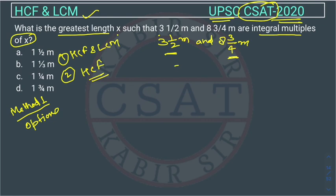This will become 7 by 2 and this will be 35 by 4. Now we have to find HCF of these number right.